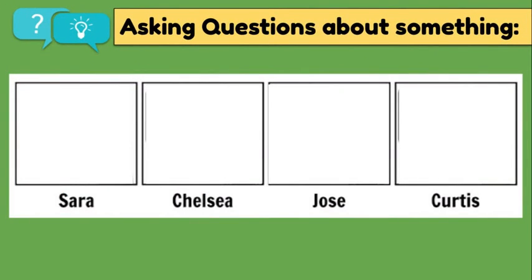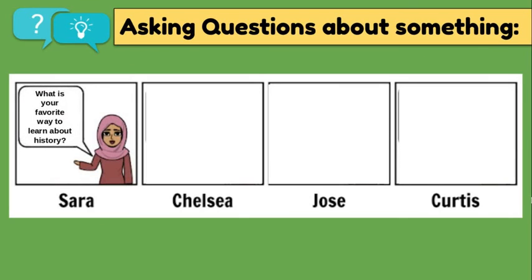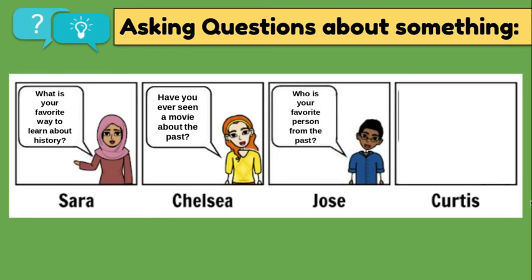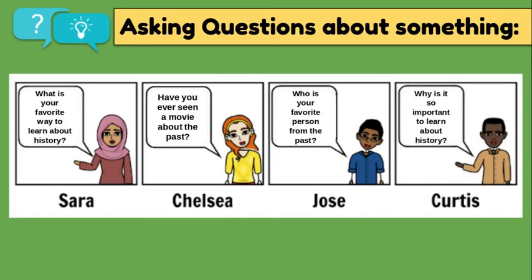Here are some characters and they're going to be asking questions — specifically about the past, since that's what my class is learning right now. Sarah says, what is your favorite way to learn history? Chelsea asks, have you ever seen a movie about the past? Jose questions, who is your favorite person from the past? And Curtis also asks, why is it so important to learn about history?